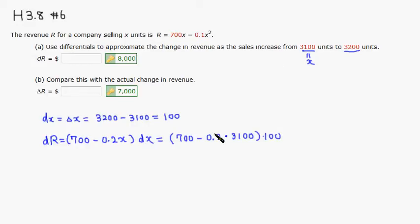Let's see, multiply by 10 and knock out the zero, so 0.2 times 3100 is 620. You can see that 700 minus 620 is 80, and 80 times 100 is 8000.